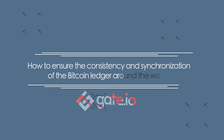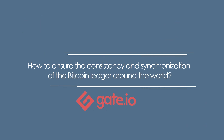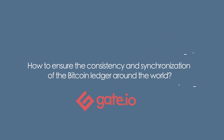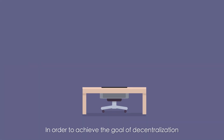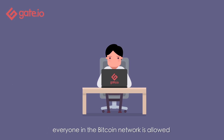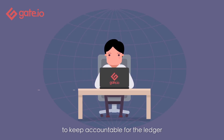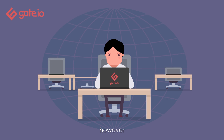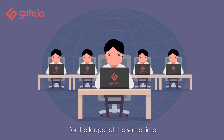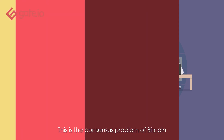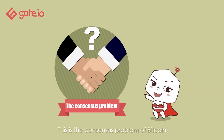How to ensure the consistency and synchronization of the Bitcoin ledger around the world. In order to achieve the goal of decentralization, everyone in the Bitcoin network is allowed to keep accountable for the ledger. However, as too many people keep accountable for the ledger at the same time, who should we listen to? This is the consensus problem of Bitcoin.